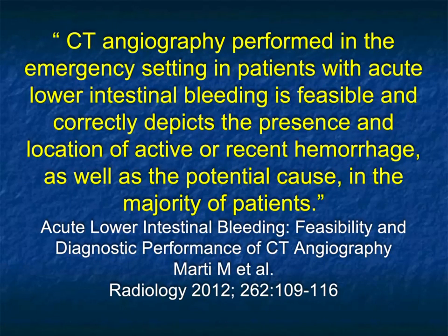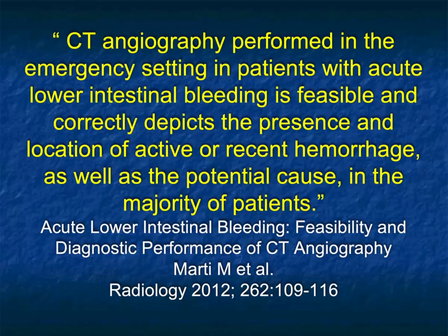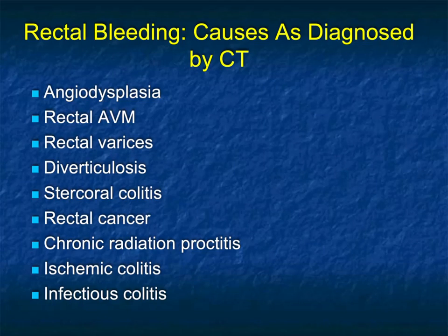CT angiography performed in an emergency setting in patients with acute lower intestinal bleeding is feasible and correctly depicts the presence and location of active or recent hemorrhage, as well as the potential causes in the majority of patients. This was an important article written nearly 12 years ago showing that when done correctly, CT had an accuracy in the high 90% range.